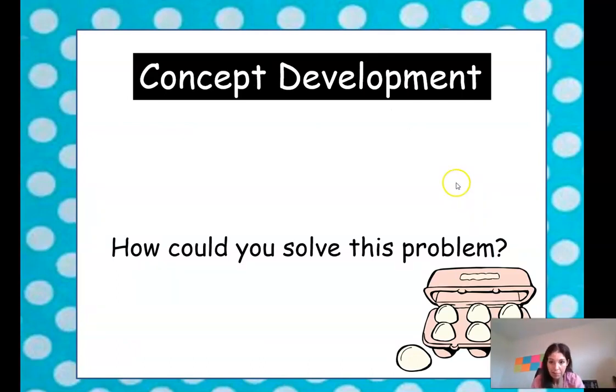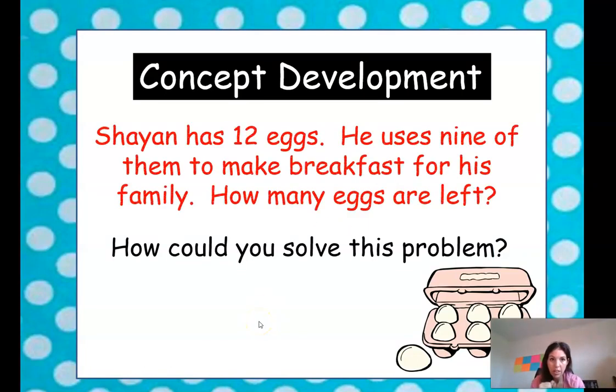Okay. We have a new problem. Cheyenne has 12 eggs. He uses 9 of them to make breakfast for his family. How many eggs are left? So he has 12 eggs and he uses 9 of them. How could you solve this problem? What could you do?